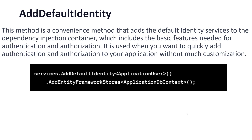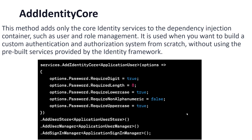You can also add a default token provider and so on. In the case of AddIdentityCore, it is similar to AddIdentity but with a key difference. This method adds only the core identity services to the dependency injection container, such as user and role management. It is used when you want to build a custom authentication and authorization system from scratch without using the pre-built services provided by the Entity Framework. If you want to fully customize and start from scratch, you can use AddIdentityCore.